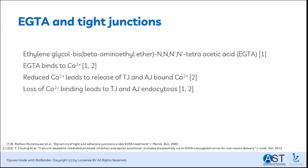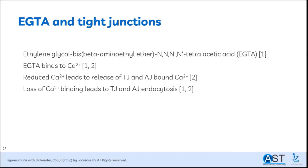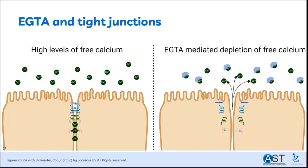EGTA is a component that can interfere with the tight junctions. In a healthy situation, there is calcium between and outside the cells in balance. EGTA can bind to free calcium and capture it, thereby reducing the concentration of free calcium. To stabilize the concentration, calcium bound to adherens junctions is released, and the adherens junctions and tight junctions are broken up to release that calcium. After breaking of the junctions, the proteins are engulfed by the cell via endocytosis.